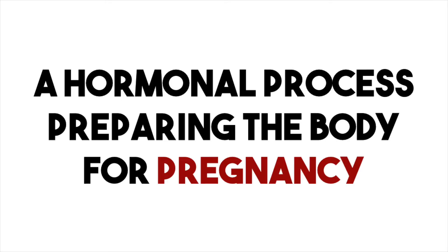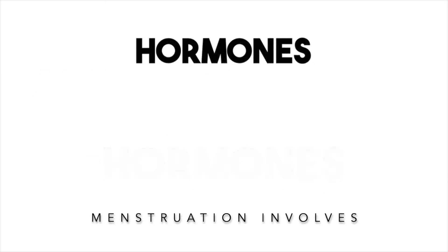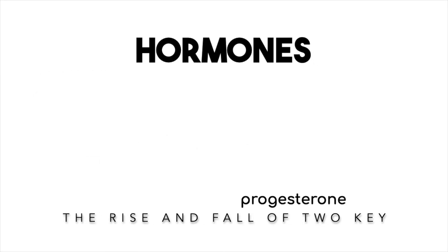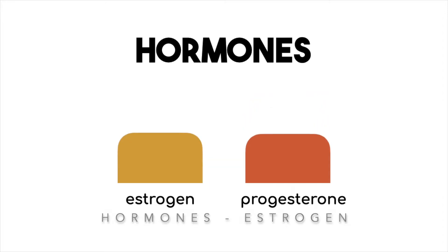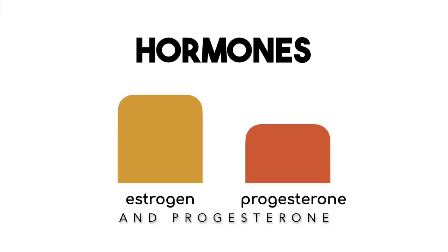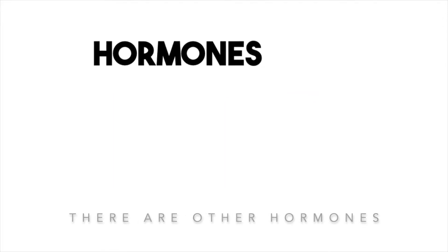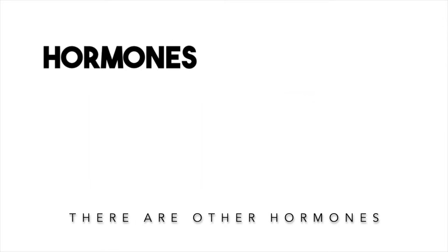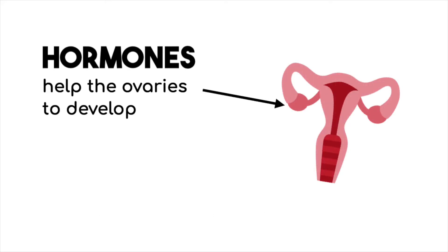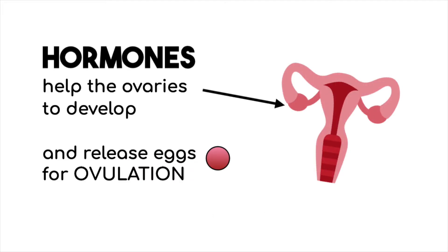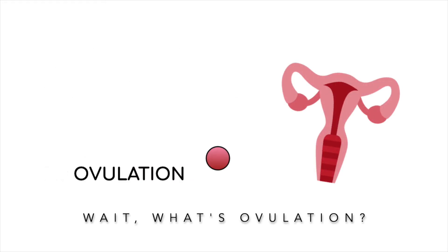The menstrual cycle is a hormonal process that prepares the body for a possible pregnancy. Menstruation involves the rise and fall of two key hormones: estrogen and progesterone. There are other hormones involved in this process that help the ovaries develop and release eggs for ovulation.